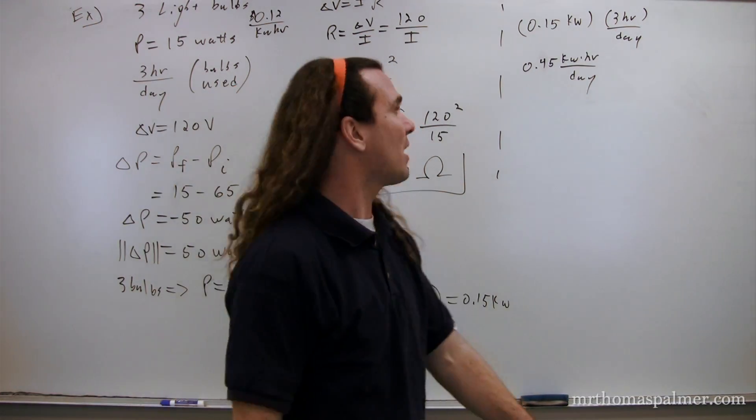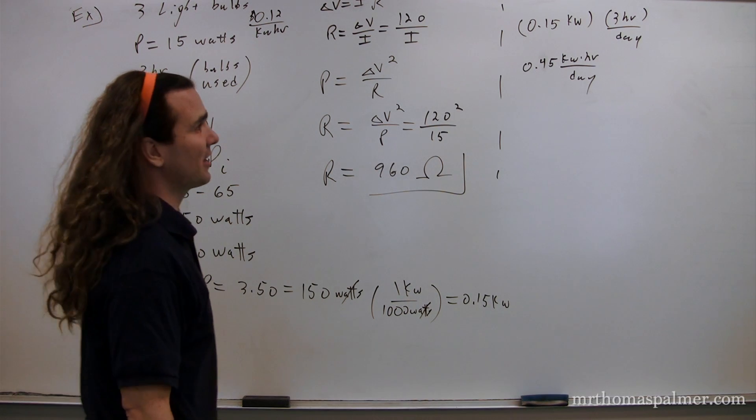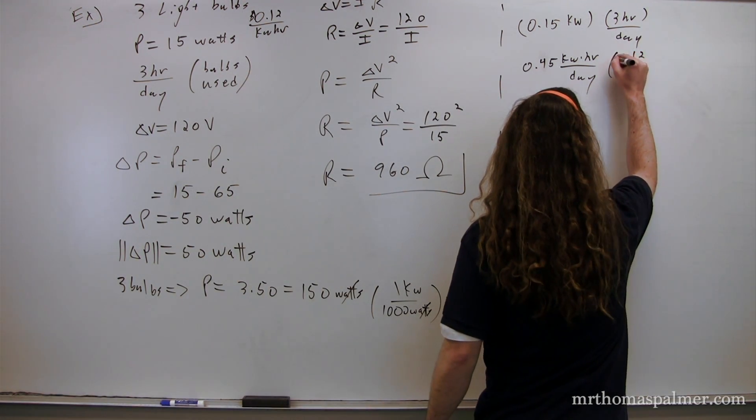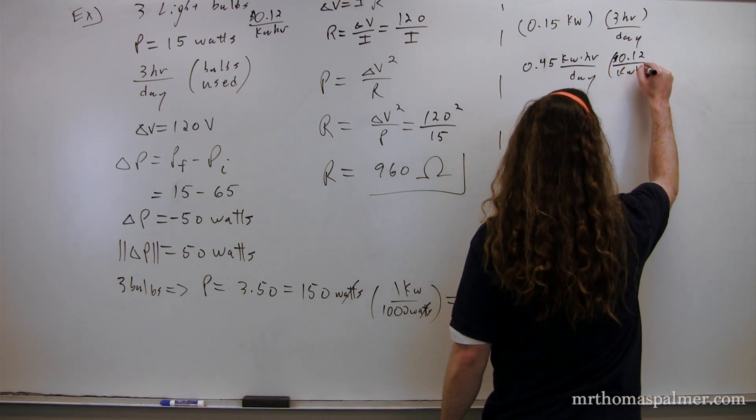What were we doing? Oh, yeah. We were trying to figure out how much money it would cost to power these three light bulbs. The company that made the light bulbs gives a pretty good estimate at a cost of 12 cents per kilowatt hour. So, at 12 cents per kilowatt hour, all we have to do is multiply this by our 12 cents per kilowatt hour. So, 0.12, that's 12 cents per kilowatt hour.